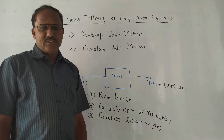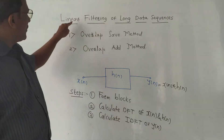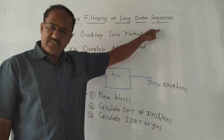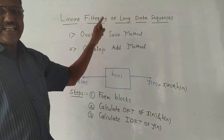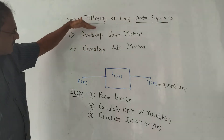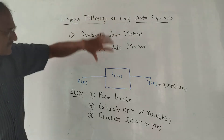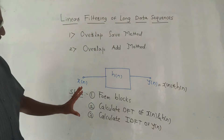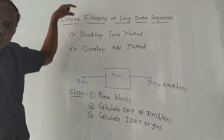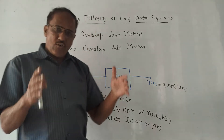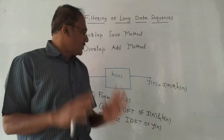Hello and welcome back to this channel. Today's topic is linear filtering of long data sequences, related to digital signal processing (DSP). There are two methods: the overlap save method and the overlap add method. Before discussing these methods, let us understand the basic concept. Linear filtering is also called linear convolution. The basic meaning of filtering is removing noise signals contained in the original signal.